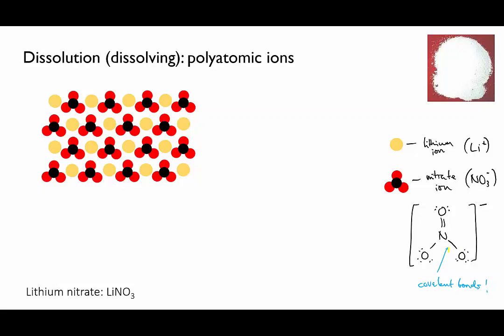So lithium nitrate, like any ionic compound that has a polyatomic ion in it, is a sort of hybrid. Although the bonding between the lithium ions and the nitrate ions is ionic, there is also that covalent bonding within the polyatomic nitrate ions.